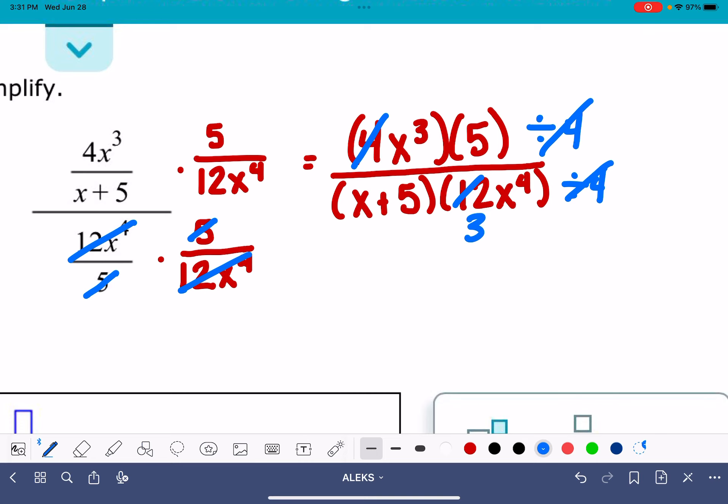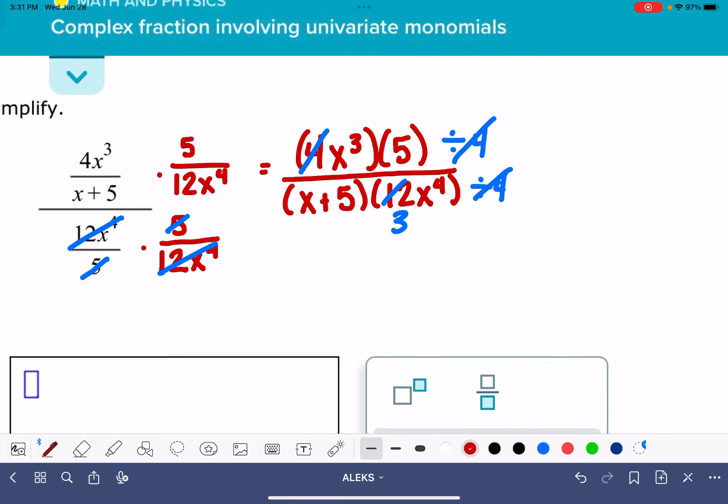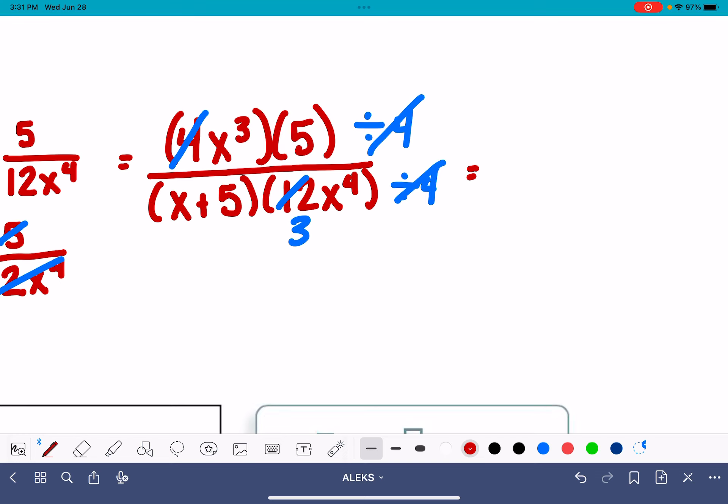Then I'm going to be able to cancel those 4s out, and I'm going to be able to convert that 12 into a 3. So that is going to simplify down to 5x cubed. I just rearranged those terms up there on the top. 5x cubed over x plus 5 times 3x to the 4th.